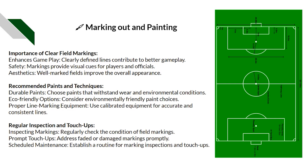Ensure marking machinery is properly calibrated — you want the right line width, the right amount of paint, and no blocked or damaged nozzles making lines uneven. Regular inspections and touch-ups are needed: check markings, address any faded or damaged areas particularly after games, and establish a routine marking inspection schedule as part of the overall management plan so that fading lines are remarked as soon as possible.